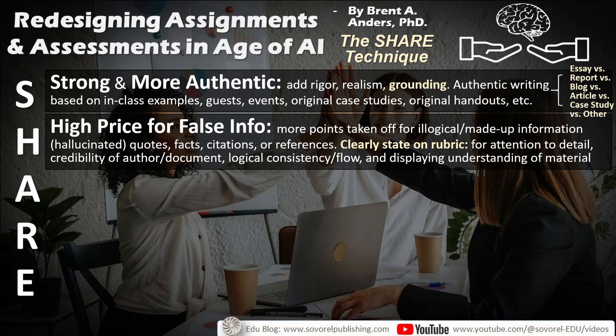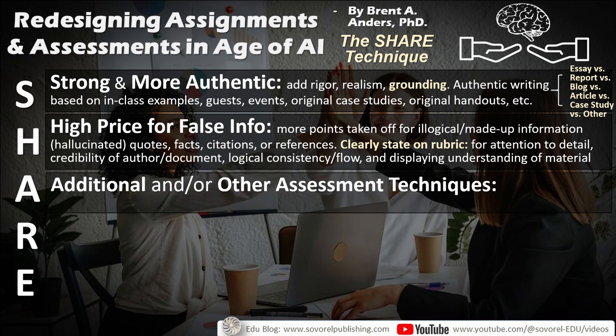The next letter is A, for Additional and/or Other Assessment Techniques — other things that can be done to assist in the overall assessment. We have to think: is the essay really the best way to address this student learning outcome? Using a written assessment is very typical, but we have to ask ourselves, are we doing this just because it's always been done that way, or is this the best way to address this SLO? In the age of AI, is it enough, or do we need to modify or add something to it?